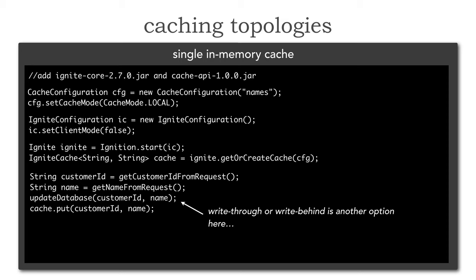Write-behind is that same process where I don't need the update database call, but the write-behind is asynchronous. I put it into my cache and eventual consistency applies — Ignite will take care of writing to the database asynchronously. This means I may have some inconsistencies between my cache and the database at times, but I do get better performance.